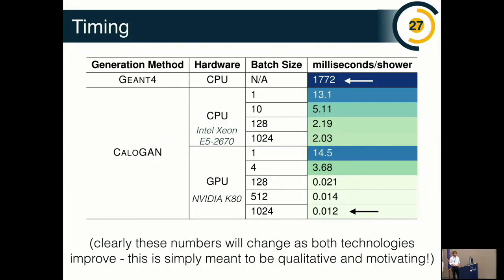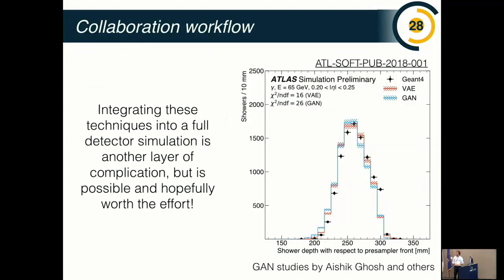The whole point of this process was to speed up the physics-based simulator. Here are some timing results: our slow physics-based simulator takes something like a thousand milliseconds to generate an image for a single particle on a benchmark computer. Using batching on GPU with the GAN it's much faster — around five orders of magnitude faster — which is not so surprising because it's not doing all the deep physics that the physics-based simulator is doing. This is one of the most promising aspects of this approach.